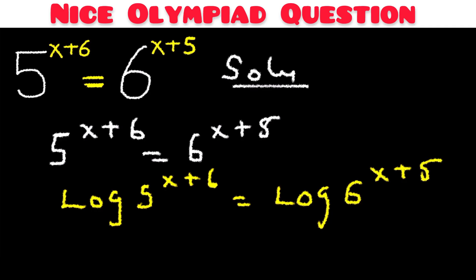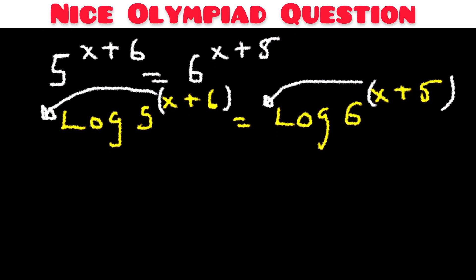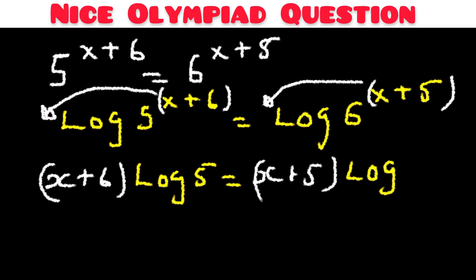All we need to do now is bring the exponents to the front using the logarithm power rule. This gives us: (x plus 6) times log 5 is equal to (x plus 5) times log 6.